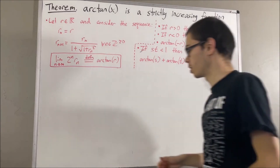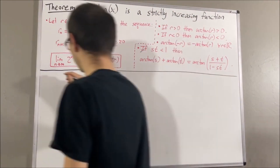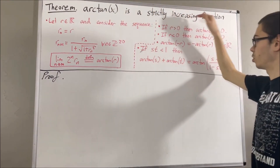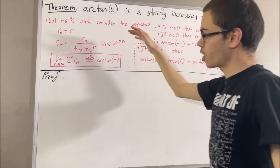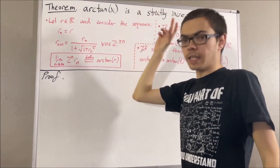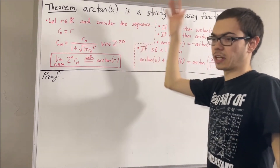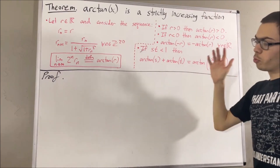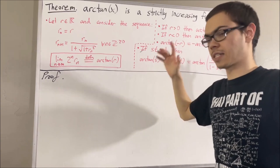Now let's get into proving this theorem. We're trying to prove that the arctangent function is a strictly increasing function. What that means is: given any two real numbers x and y, if x is less than y, then the arctangent of x is less than the arctangent of y. So let's give ourselves two real numbers x and y such that x is less than y.